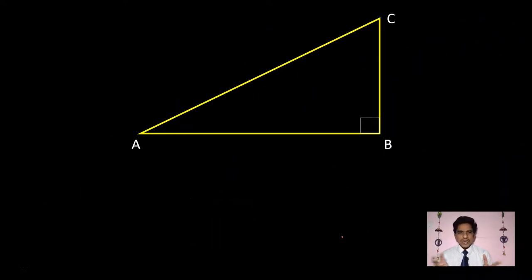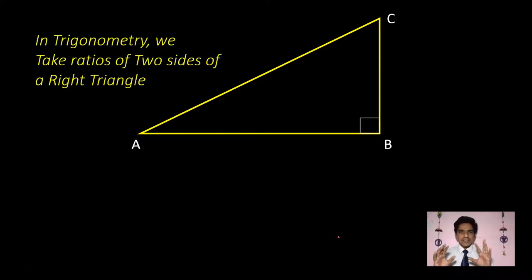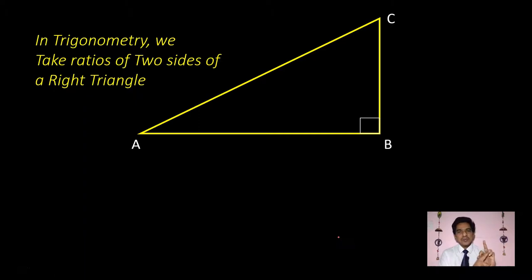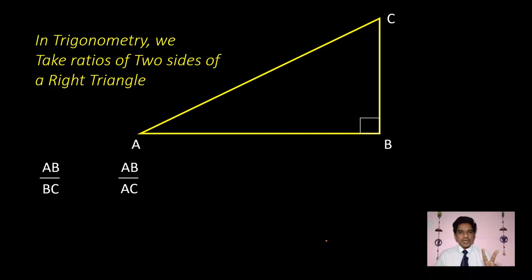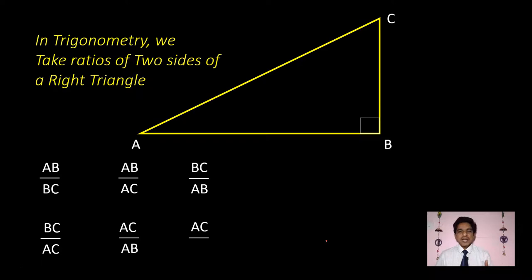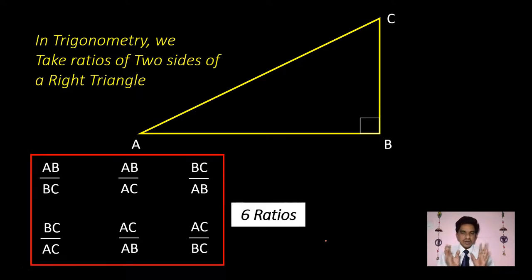Trigonometry takes the ratios of the sides of a triangle — we call these trigonometric ratios. We have three sides: AB, BC, and AC. We can write six different ratios from these three sides: AB/BC, AB/AC, BC/AB, BC/AC, AC/AB, and AC/BC. These six ratios are called the six trigonometric ratios.